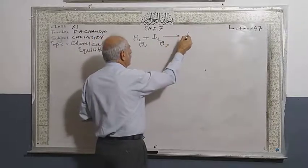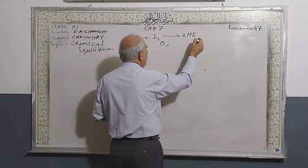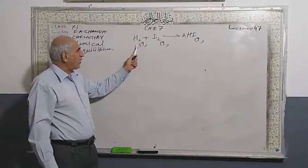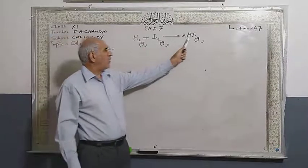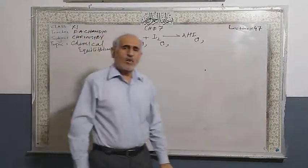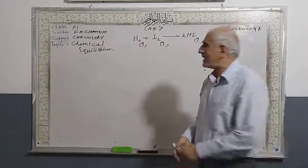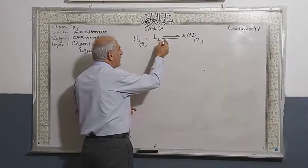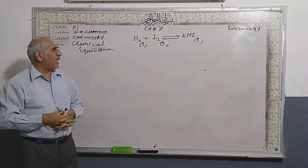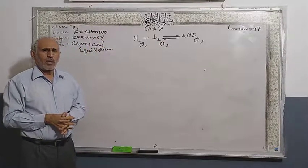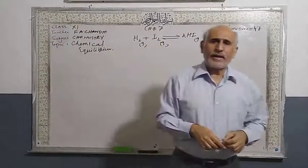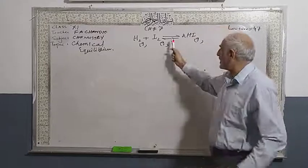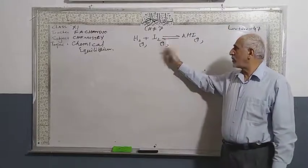The forward step produces two moles of hydrogen iodide. But at the same time, hydrogen iodide decomposes to form hydrogen and iodine molecules again. These two half-headed arrows show the reversibility of the reaction — this represents reversible chemical reactions.